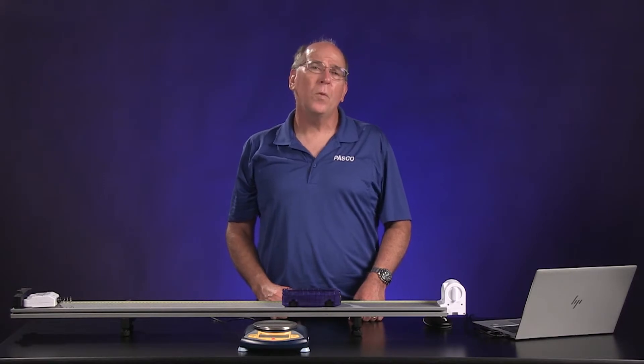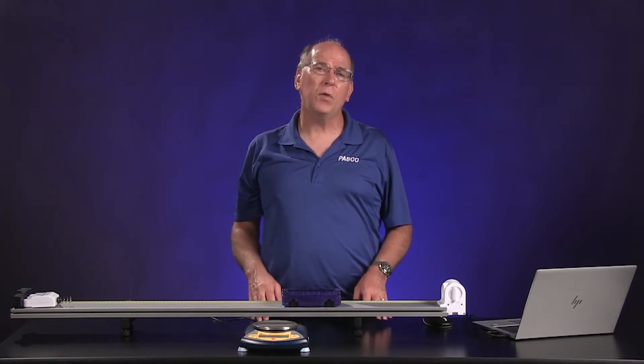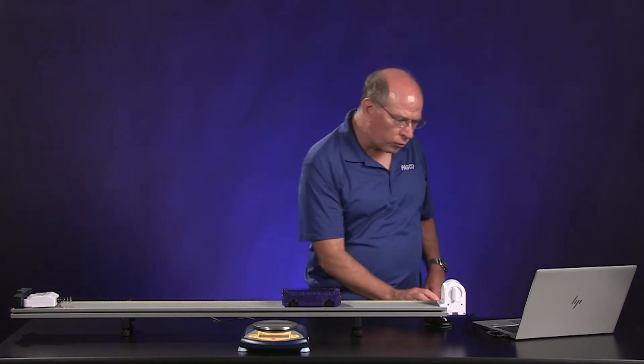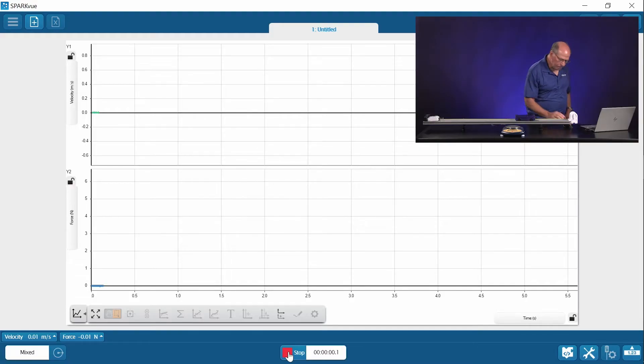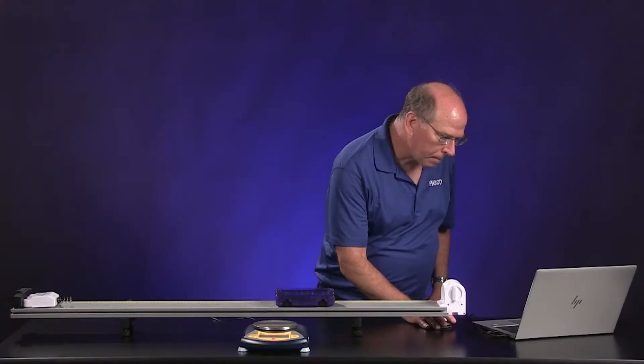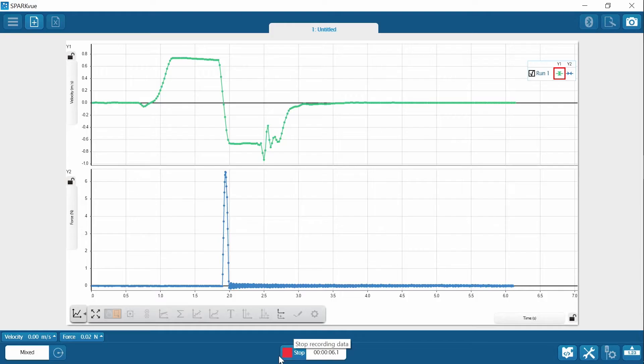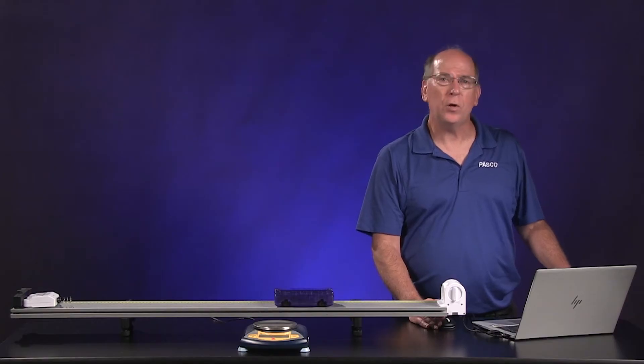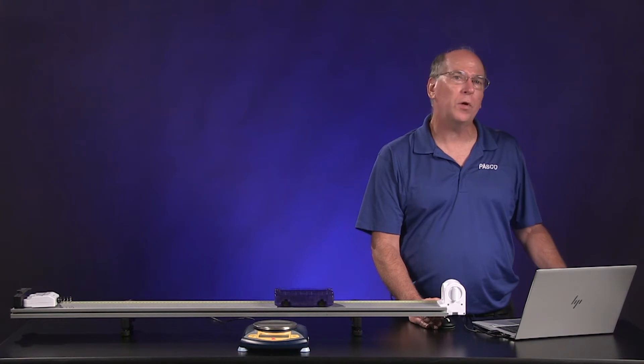For each trial, we start data collection in SparkView and then give the cart a short push toward the force sensor. We can see where the collision occurred on the velocity graph and the force graph. On the velocity graph, the velocity changes from positive to negative during the collision. We can measure the velocity just before and just after the collision to find the change in velocity.